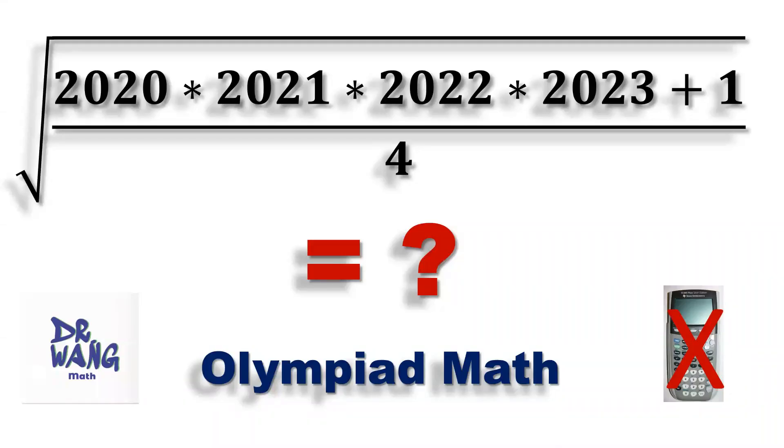Hello everyone, this is Dr. Wang. Here is the question. We want to find the answer for this square root of the four numbers, that's consecutive numbers, plus one, then divide by four.